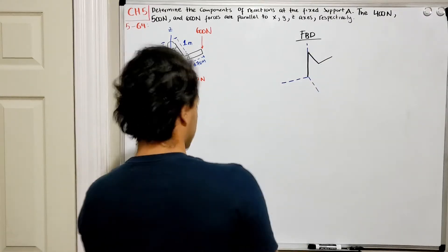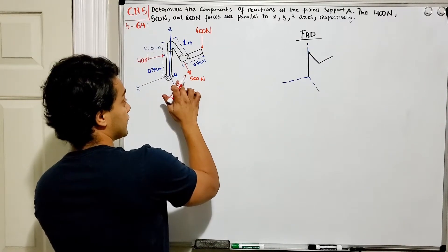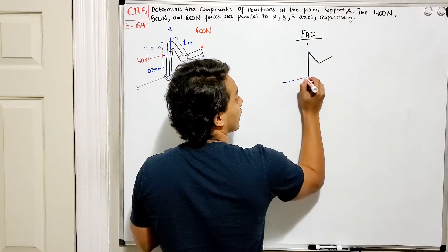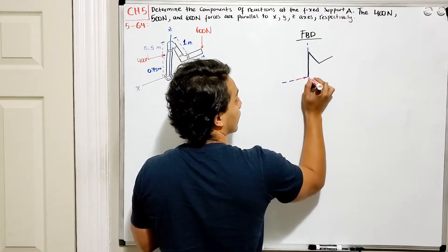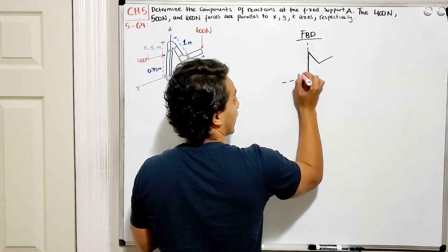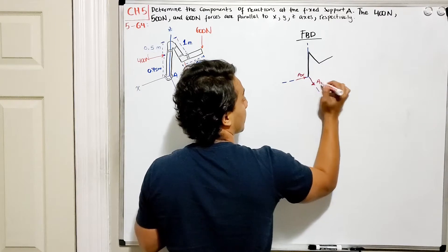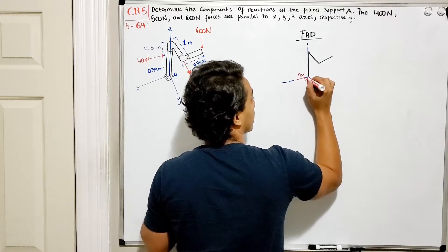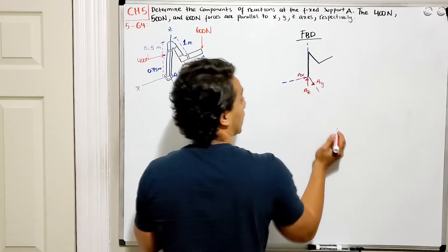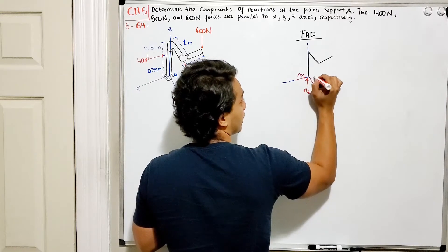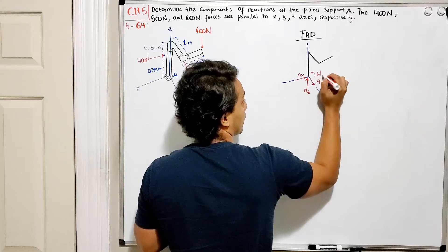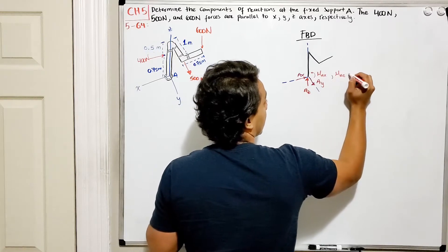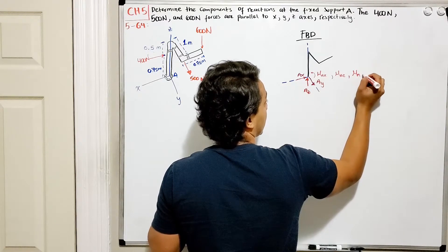Now, which forces do we have? I have three forces and three moments at my point A. I'll have an AX component, an AY component, and a positive AZ component. I'll also have three moments: a moment of A in the X, a moment of A in the Z, and a moment of A in the Y.